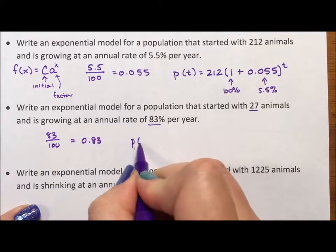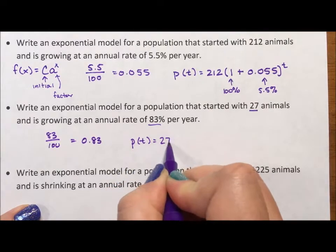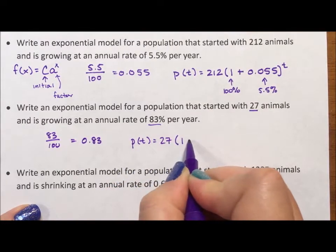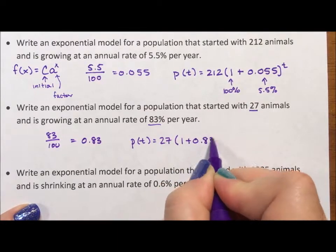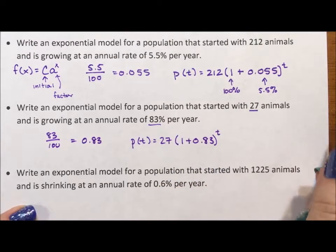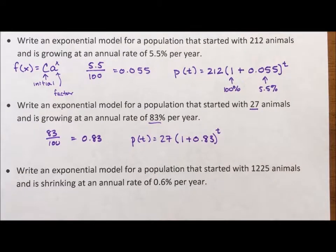So population over time, we start with 27, and we are growing at 83 percent, and then we put the exponent because we're multiplying to move forward.